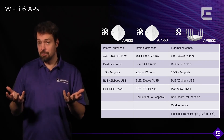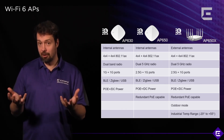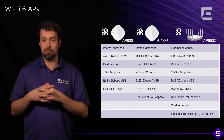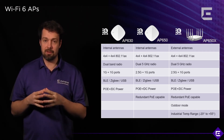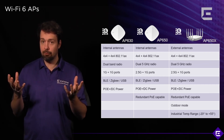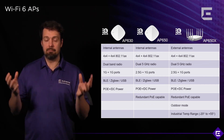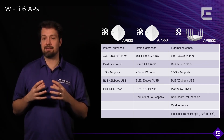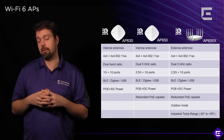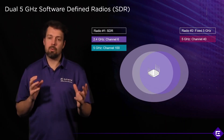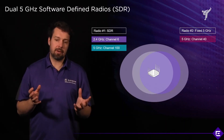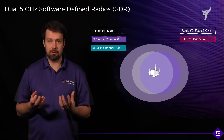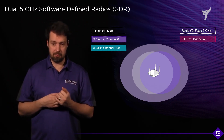We're also introducing a third option, the AP305C, which is going to be a more affordable, lower-powered 802.11ax access point with 3x3 radios. So here's a quick summary of why dual 5 GHz or software-defined radios are important.